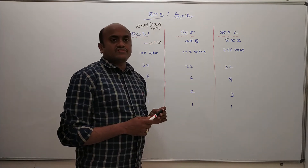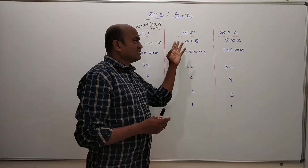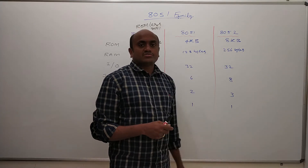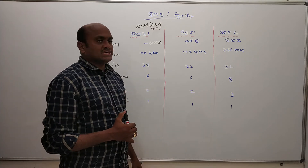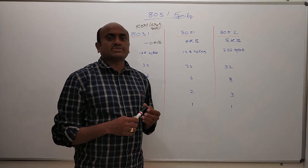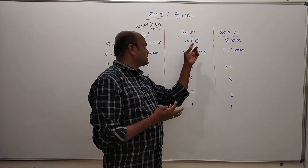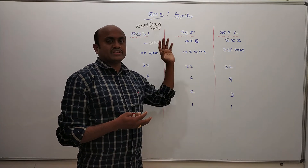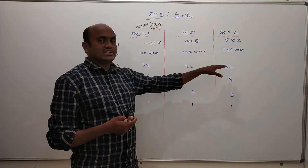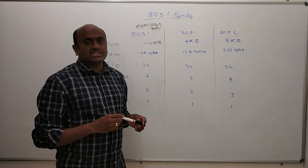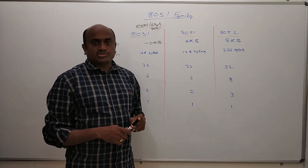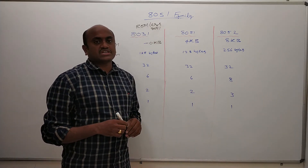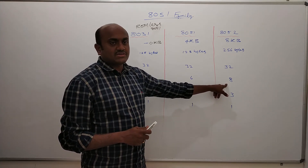Now coming to the 8052. The 8052 is said to be doubled in memory compared to the 8051. As you can see, 4 kilobytes of ROM became 8 kilobytes, and 128 bytes of RAM became 256 bytes. So the 8052 is an advanced version of the 8051 with double the memory. The IO lines are still 32, since all three ICs come in a 48-pin package. Coming to interrupt sources, there are 2 extra interrupt sources added, making it 8 instead of 6.